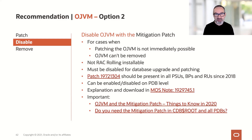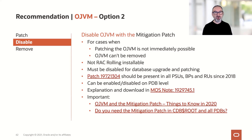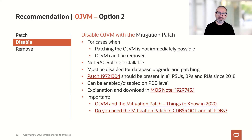For older environments — and I hope nobody is on an older patch level — there is a one-off patch available that brings the mitigation patch to the environment. You would use the mitigation patch in cases where you can't patch OJVM right now, so you know there's a critical issue but have no option to patch at the moment, or when you can't remove OJVM — for example, you know it's not used by your applications but you need to do something.